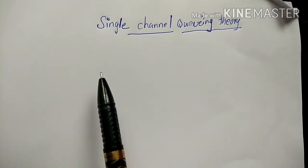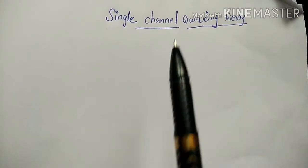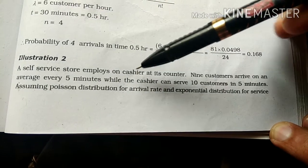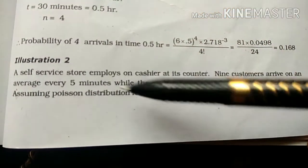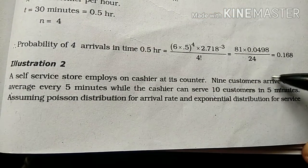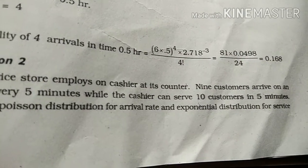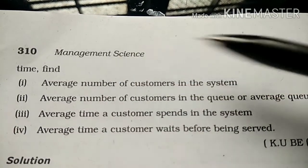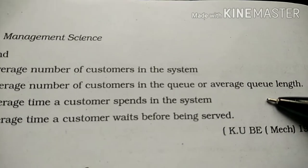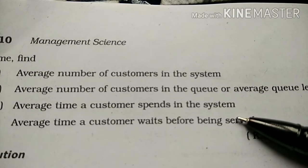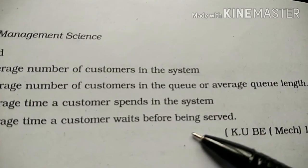Dear students, today we are going to discuss problems in single channel queuing theory. Let us see one example. A self-service store employs one cashier at its counter. Nine customers arrive on average every five minutes while the cashier can serve 10 customers in five minutes. Assuming Poisson distribution for arrival rate and exponential distribution for service, find: average number of customers in the system, average queue length, average time a customer spends in the system, and average time a customer waits before being served.